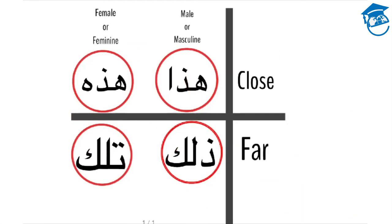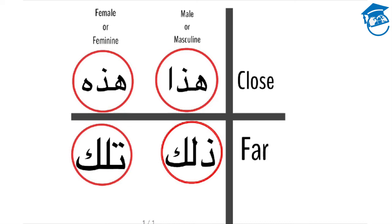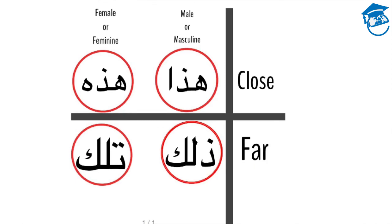Now let's recap which ism el-ishara you need to use. If something is close to you and it's a male or of the masculine gender, you use hadha. If something is close to you but it's of the feminine gender or it's female, you use hadhi. If something is far away from you and it's a male, you use valika. But if it's far away from you and it's female or of the feminine gender, you use tilka.